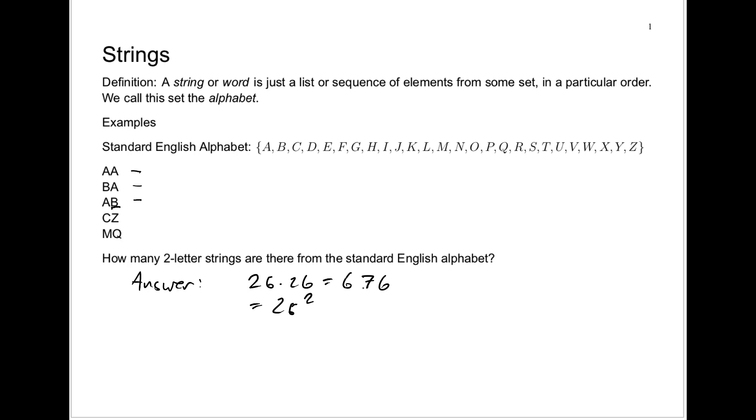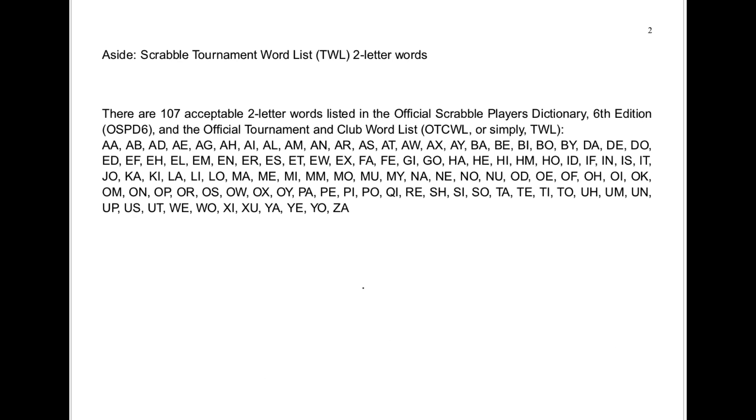Now, in general, we won't care whether these words make sense in the English language. That's not the point of what we're doing. But as a quick aside, how many of these 676 two-letter words that we just talked about are actually English words? That's a vague question because what counts as an English word? A word that's in the dictionary, but there are many different dictionaries. So, of course, we'll go to the most authoritative one, which is the Scrabble Tournament Dictionary. Those words which you're allowed to use in a Scrabble Tournament.